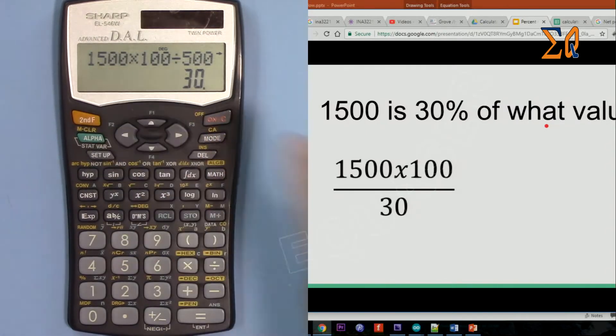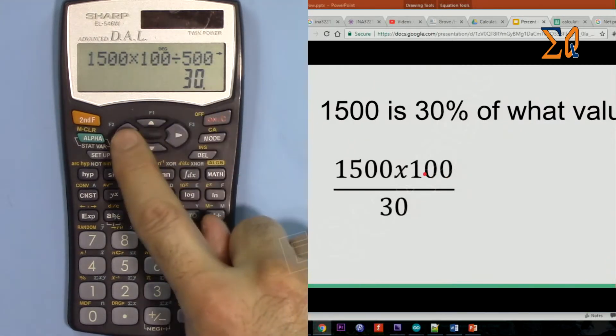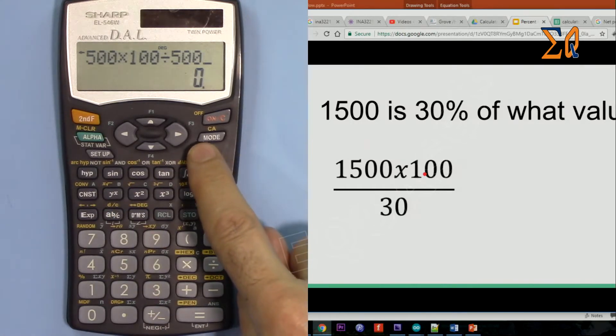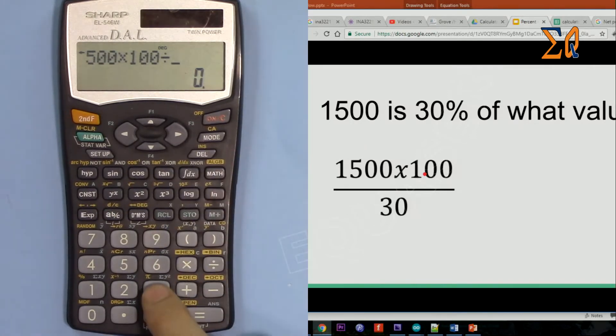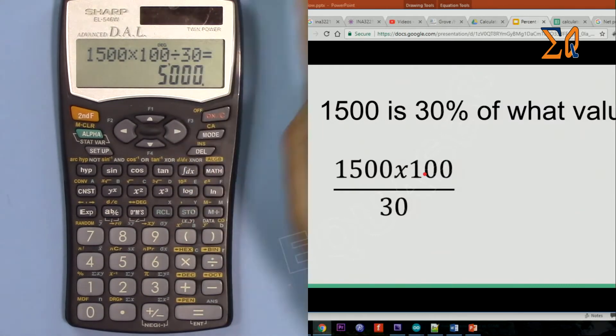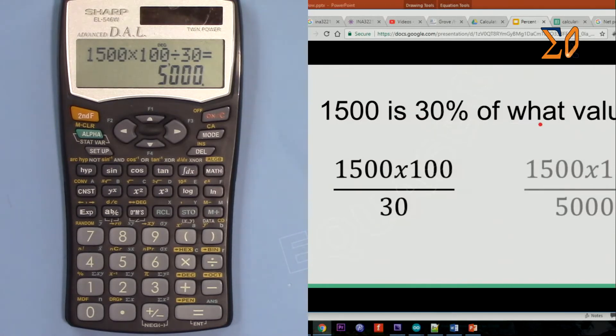The answer will be again 1500 times 100, doesn't change, and then except the divide I'm just pressing arrow and then this del, and then type 30. So it will give me 5000, that's the answer. So 1500 is 30% of 5000.